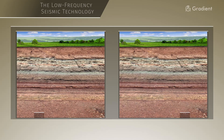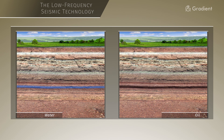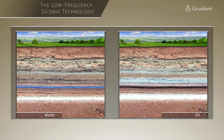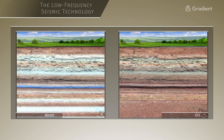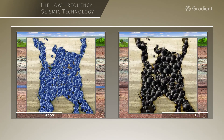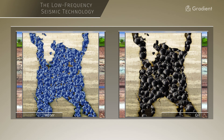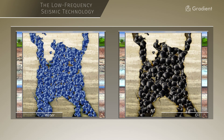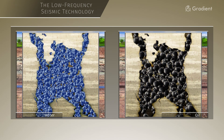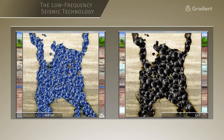Oil and gas deposits are an anomalous zone in the low-frequency range, which has increased absorption at low frequencies. The reason for the absorption is a multi-phase structure of the deposit, consisting of a rock skeleton and mobile phase — oil and gas. As a low-frequency wave passes through, the mobile phase appears here and there in the fractured porous rock skeleton.